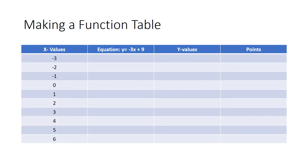First, draw a table similar to the function tables that we have been working with in class. The left-hand column is for your x values. The equation that you are given goes in the middle. The right-hand column is the y values. For our purposes I've added a fourth column on the right-hand side which is labeled points.